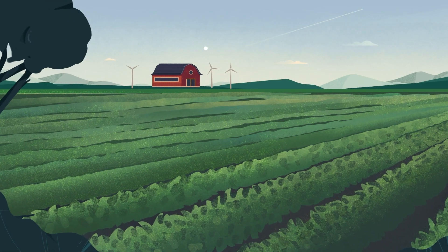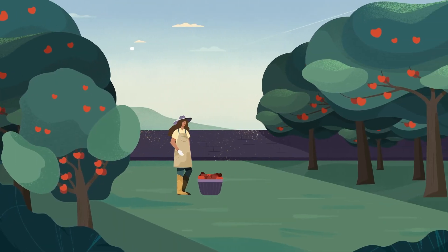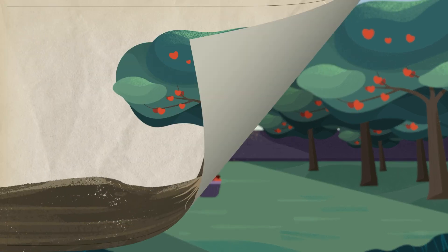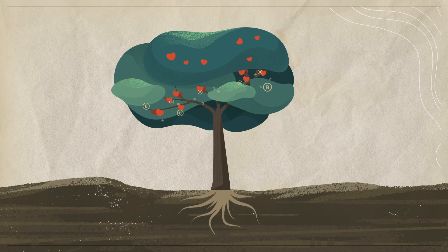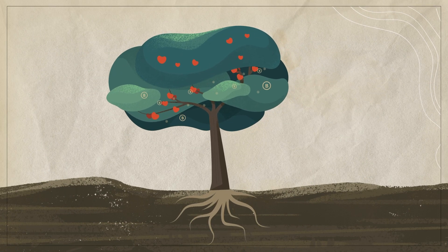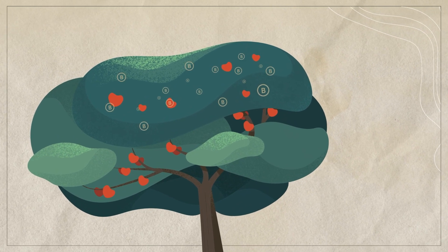Some plants are more susceptible to boron deficiency than others. Others, like apple trees, can relocate boron from old leaves to new leaves, due to the presence of polyols.